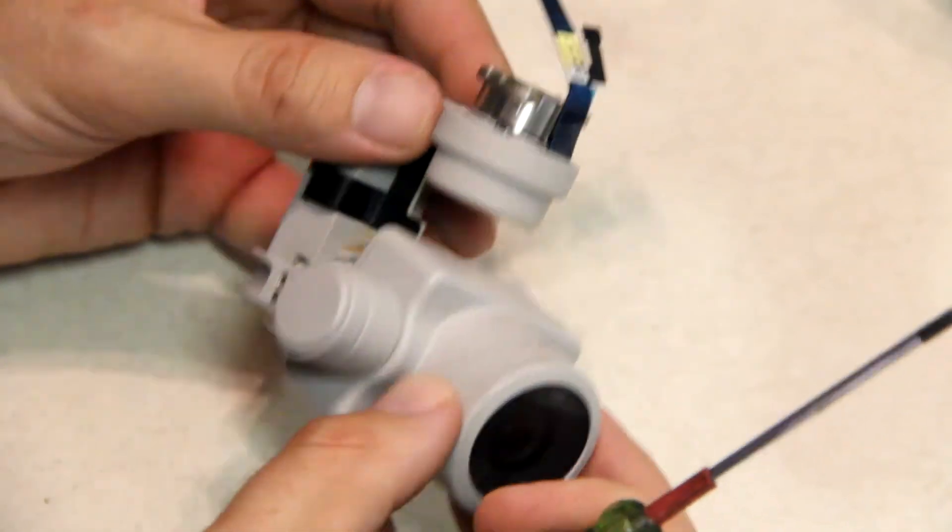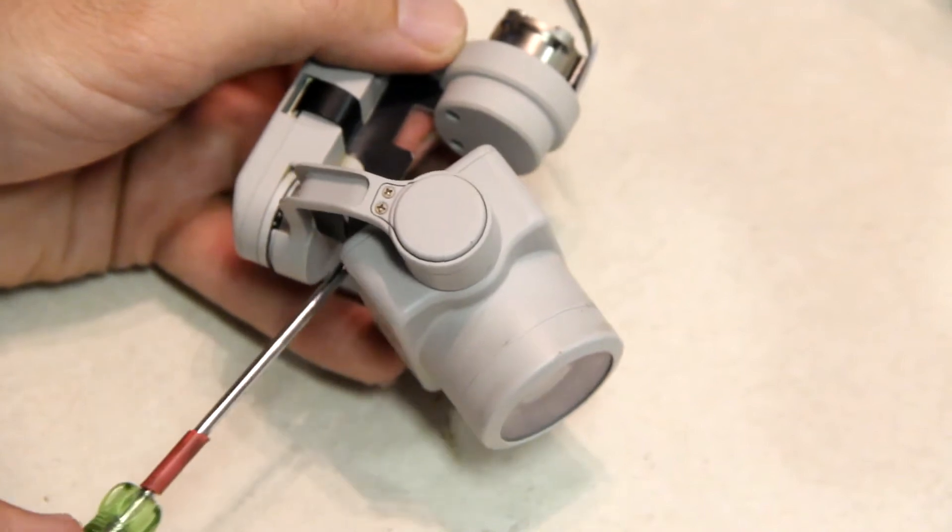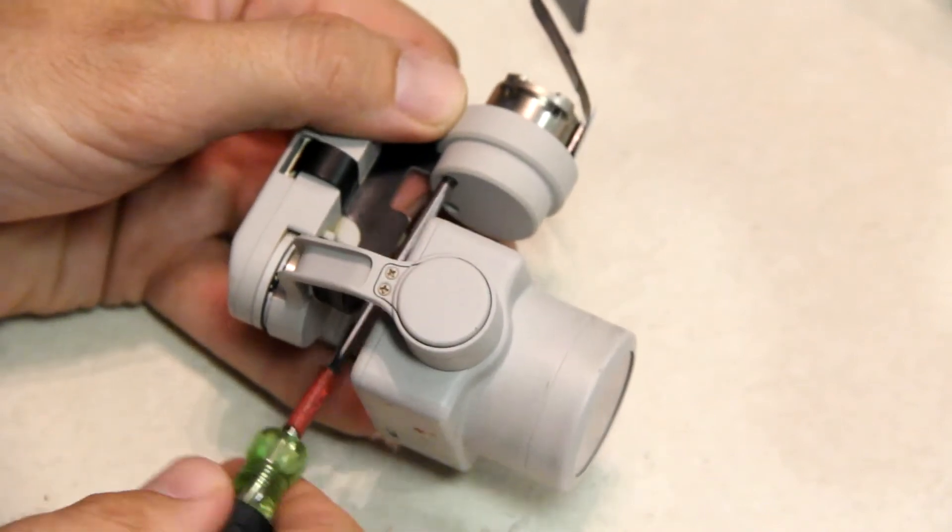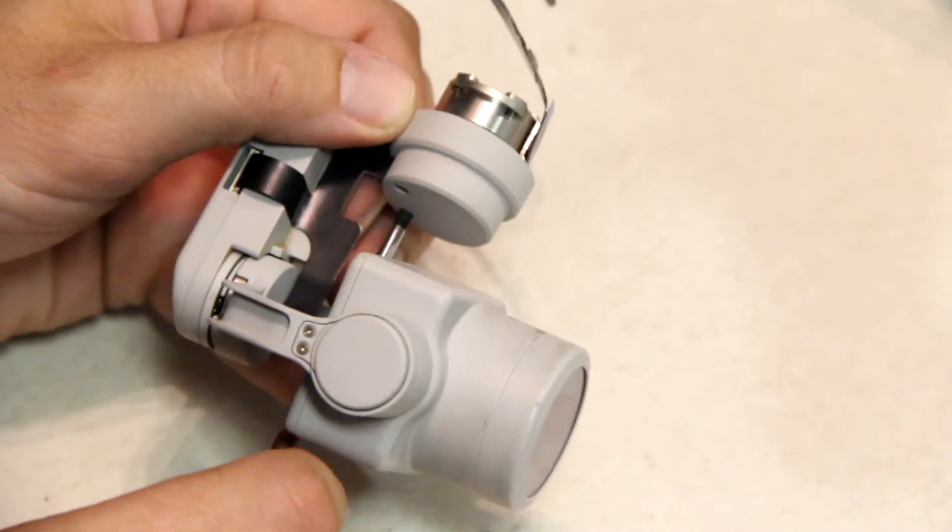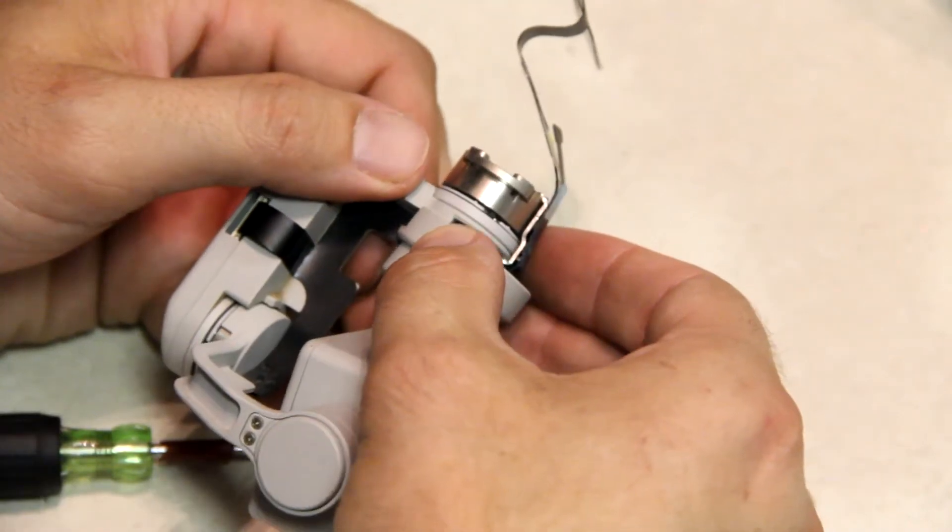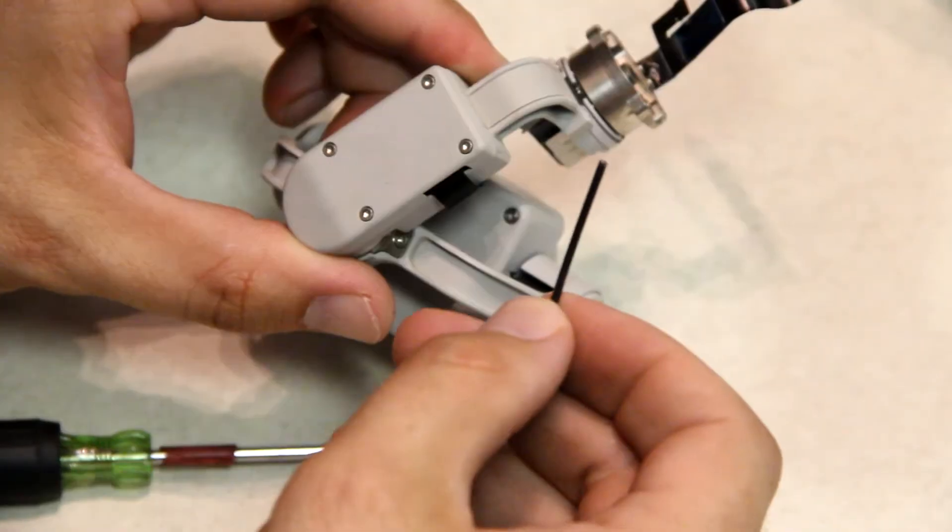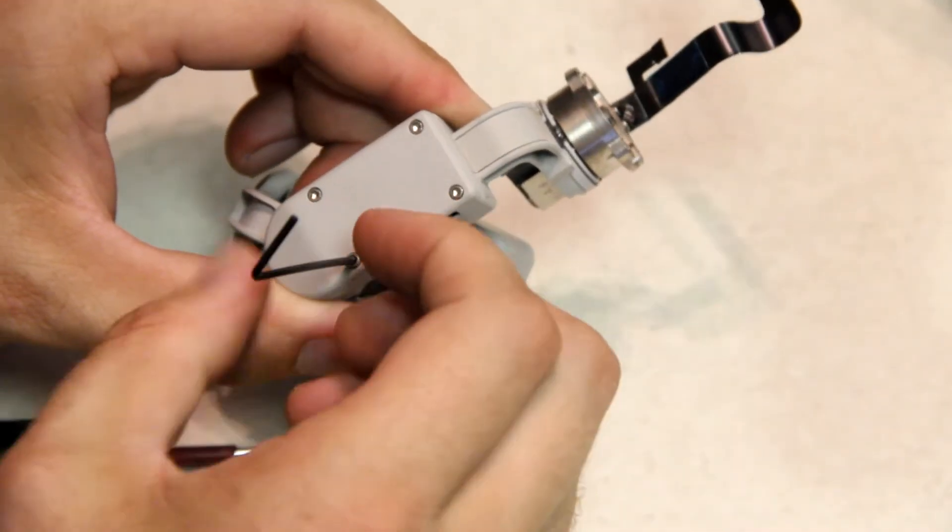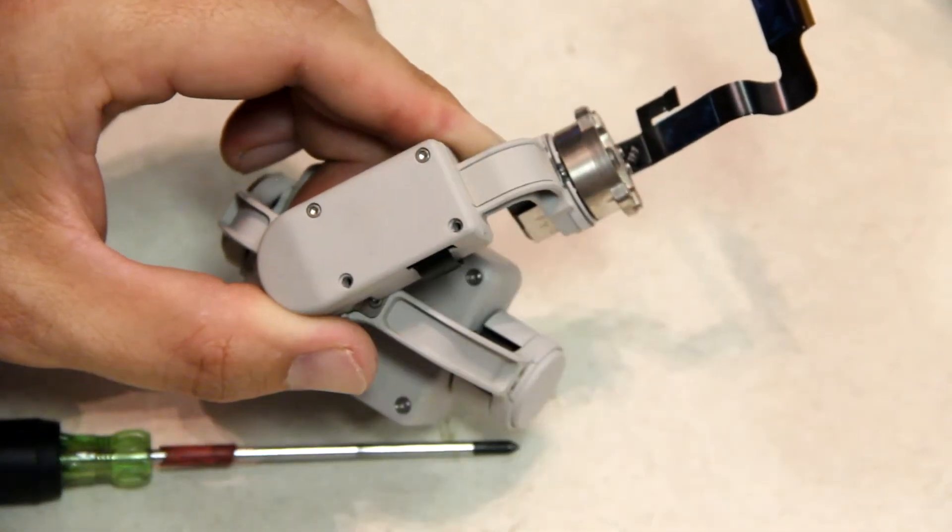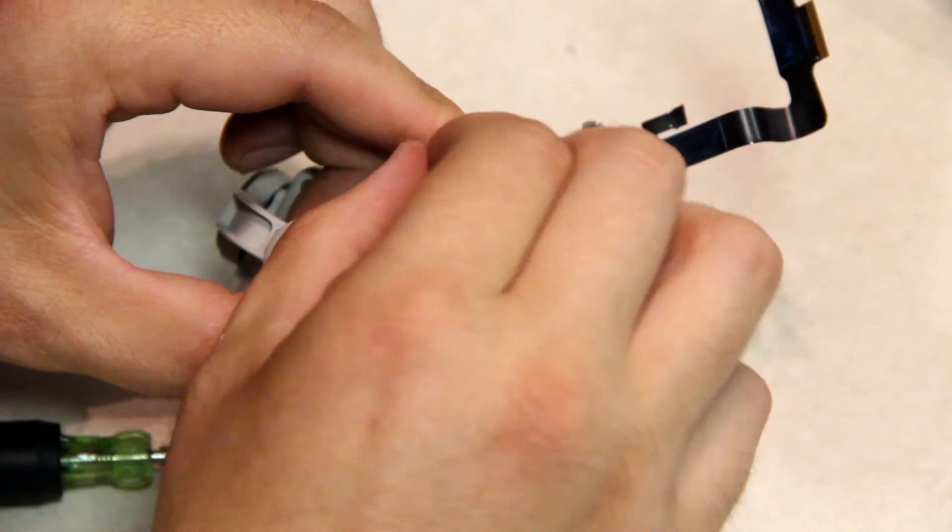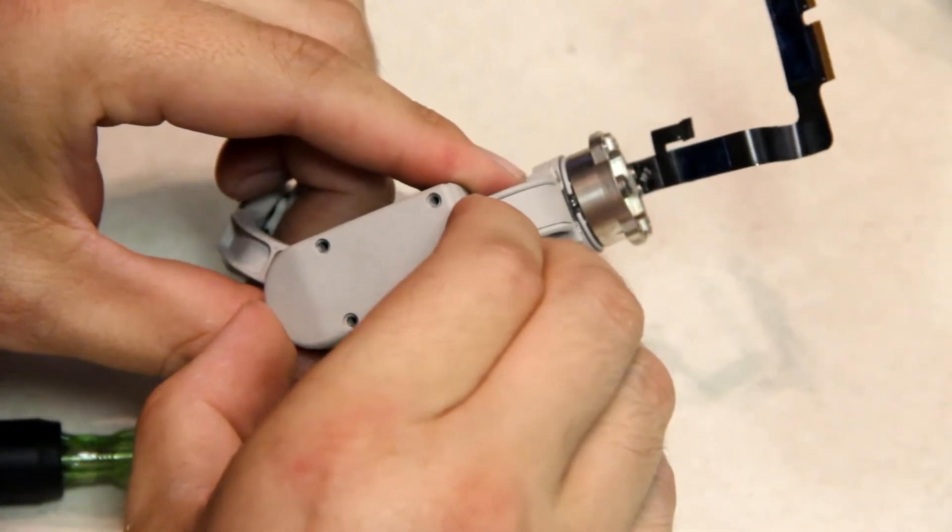Now that we've got the camera disassembled from the Phantom, what you need to do is take your Phillips head screwdriver and remove the two screws right here. Be careful with the screws. Next, take your 8mm Allen key and remove these four screws, and remove that cover.